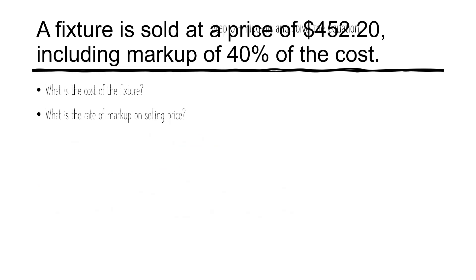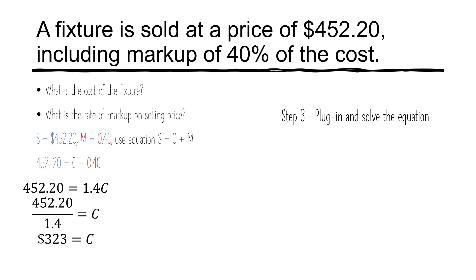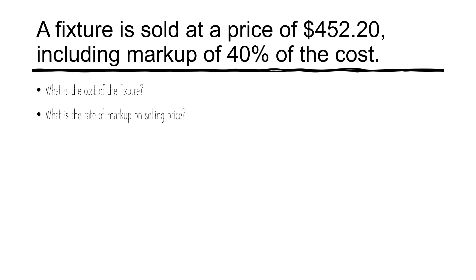Step three is to solve the equation by plugging in the variables. With the given variables plugged into the equation, it turns out that the cost is $323. The final step is to answer the questions. The question asks: what is the cost of the fixture? The cost of the fixture is $323.